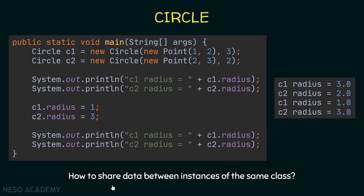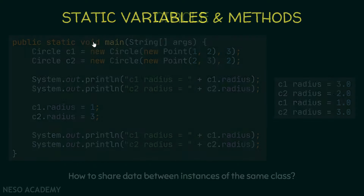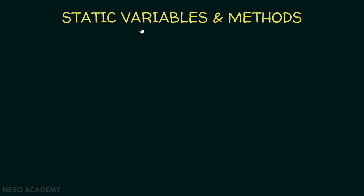Now we might ask: how do we share data between instances of the same class? In other words, what if I want to share some data between c1 and c2? In this case, we will use static variables.